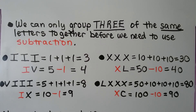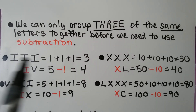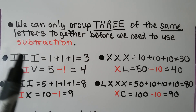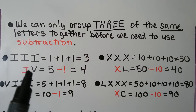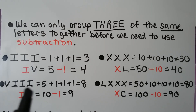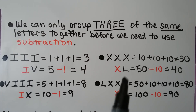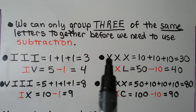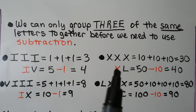We can only group 3 of the same letters together before we need to use subtraction. We have III, which is 1 plus 1 plus 1, equaling 3. But we can't have 4 I's together — we can only have 3. So we move to the subtraction of an I in front of a V, which means 5 minus 1, which is 4. We have V and then 3 I's, but we can't have 4 I's, so we move to subtraction: 10 minus 1 as IX. We can have 3 X's — that's 10 plus 10 plus 10, which is 30 — but we can't have 4 X's, so we move to subtraction: 50 minus 10 to make 40.